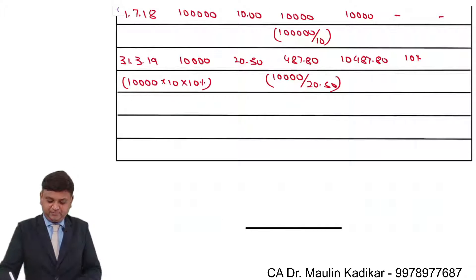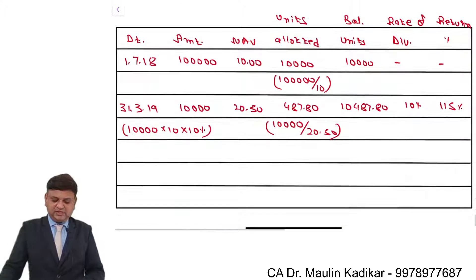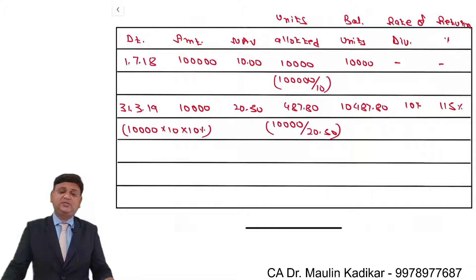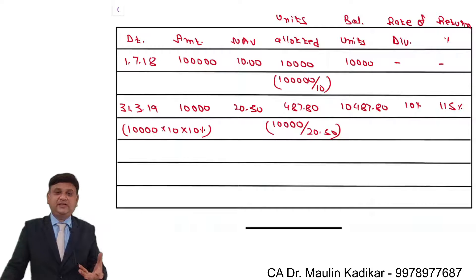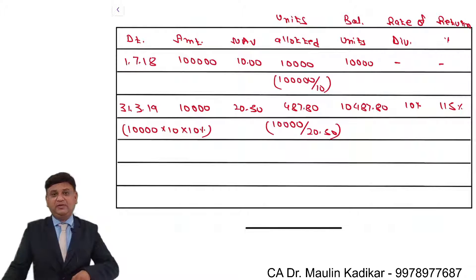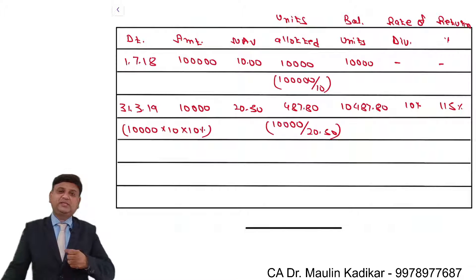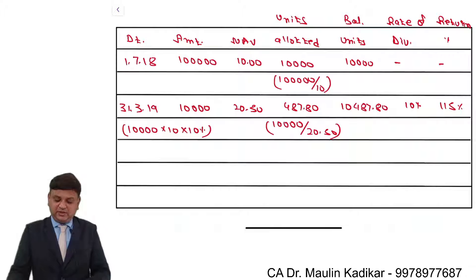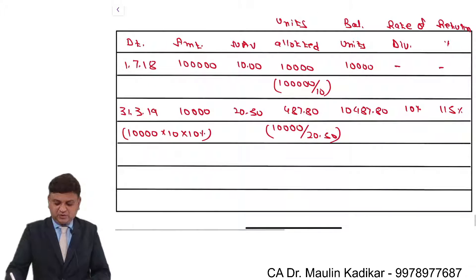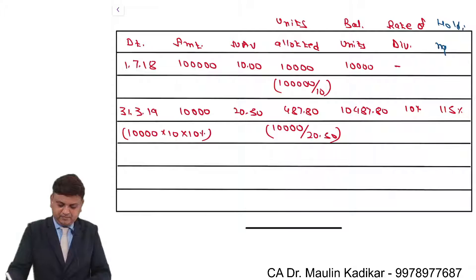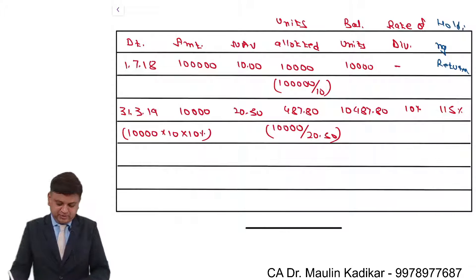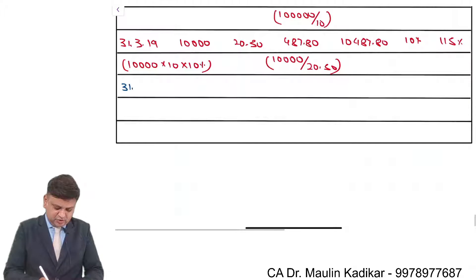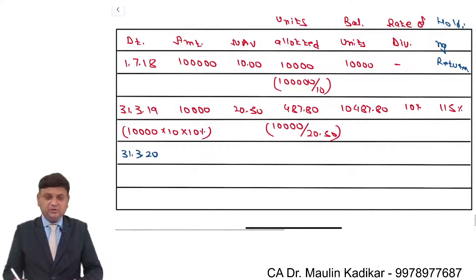Friends, something like this happens in examinations also. When we are in a hurry of giving the answer because we see a similar question already done from the practice manual or past examination papers, we go with the routine process and tend to forget that the holding period return is provided in the question — not annualized return. In that case you will be losing the entire marks. This is holding period return, and that is what we must understand.